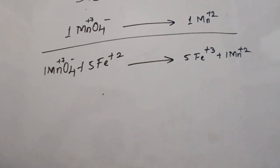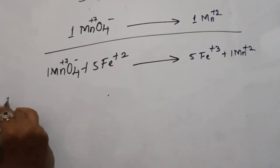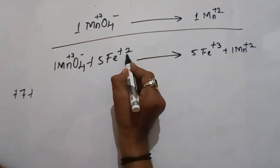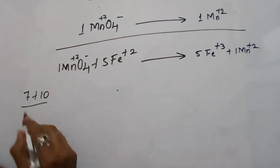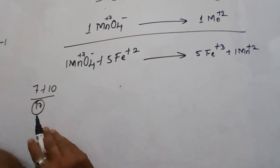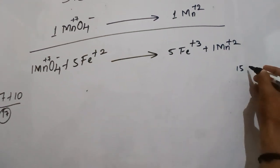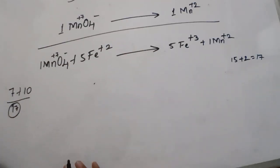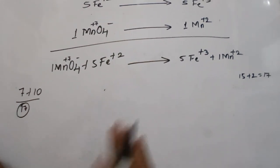On the left-hand side: one manganese has plus 7 charges, and 5 Fe2+ molecules have 5 times 2 equals 10 charges, giving a total of 17 positive charges. On the right-hand side: 5 Fe3+ gives 15 charges plus 1 Mn2+ gives 2 charges, totaling 17. Both sides now have equal charges.